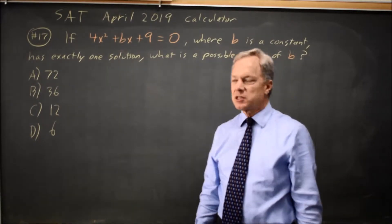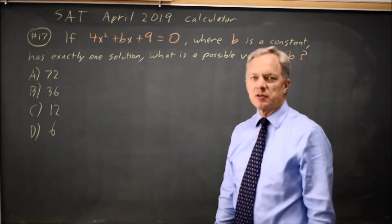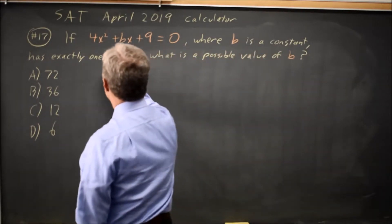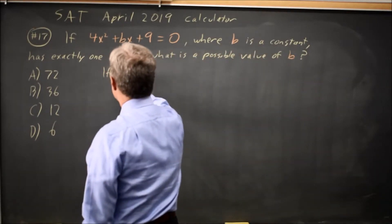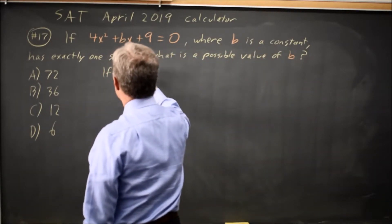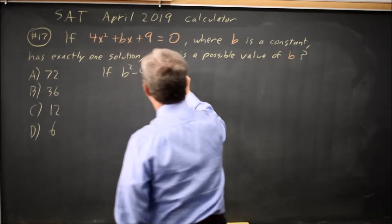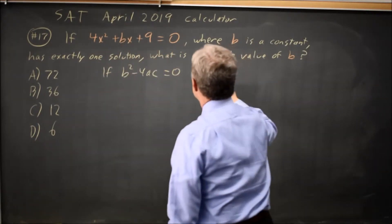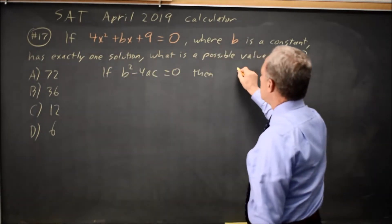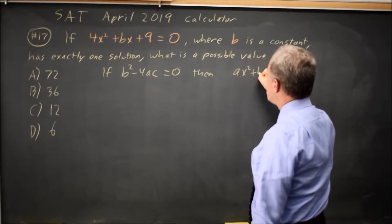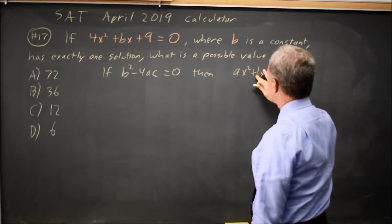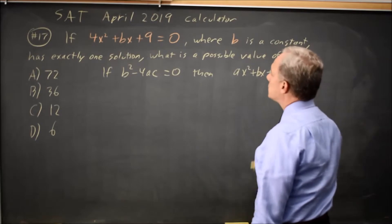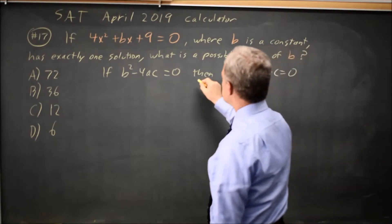One way to solve this is with the discriminant, because we know if the discriminant equals zero — that is, if b squared minus 4ac equals zero — then ax squared plus bx plus c equals zero has only one solution.